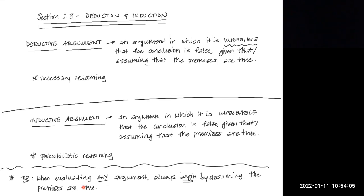So a deductive argument is one where it is impossible that the conclusion is false, given that or assuming that the premises are true. In other words, it is necessarily the case that the conclusion follows from the premises — it's impossible that it doesn't, if we assume the premises are true.